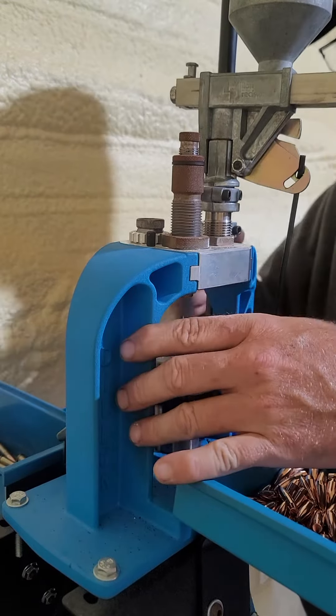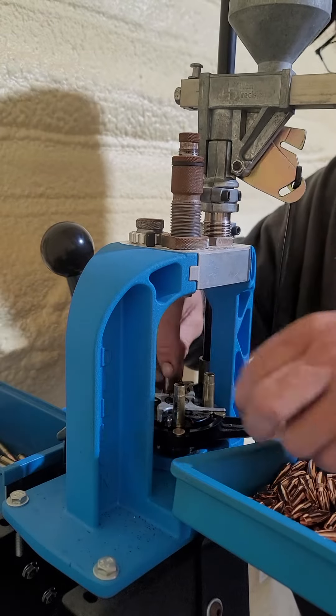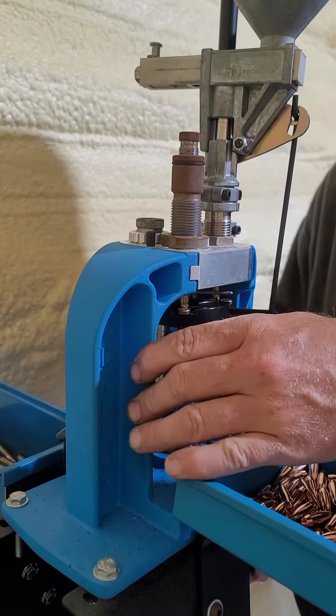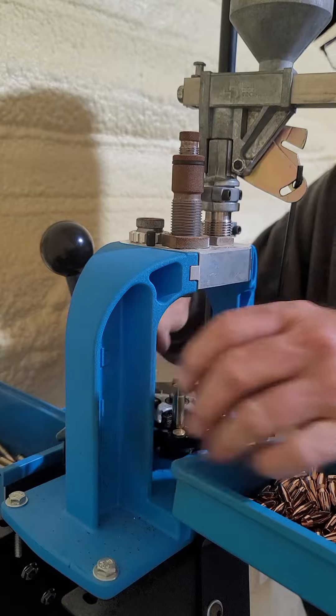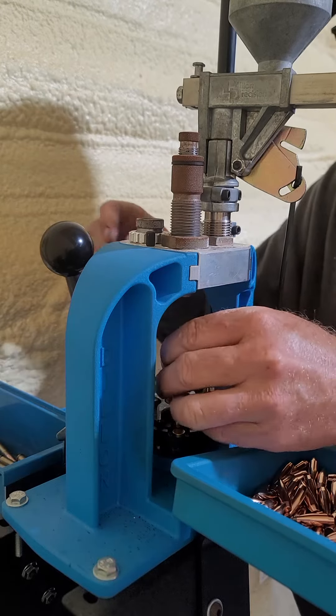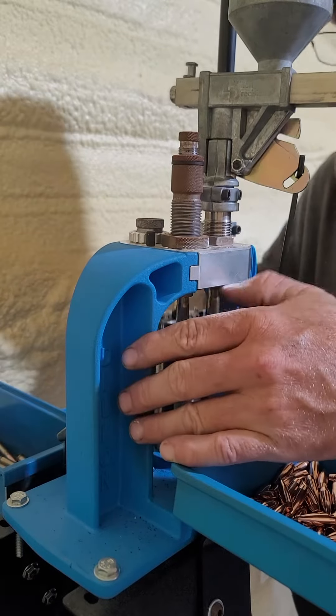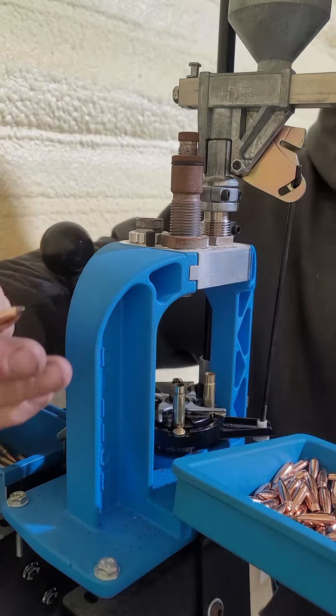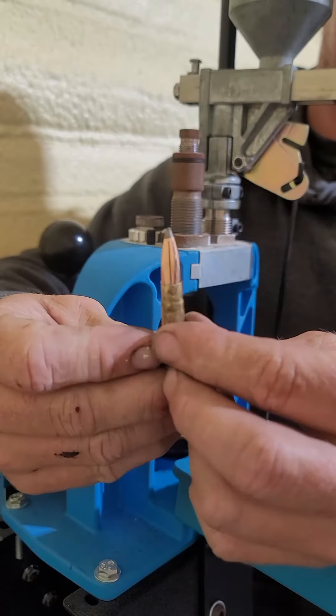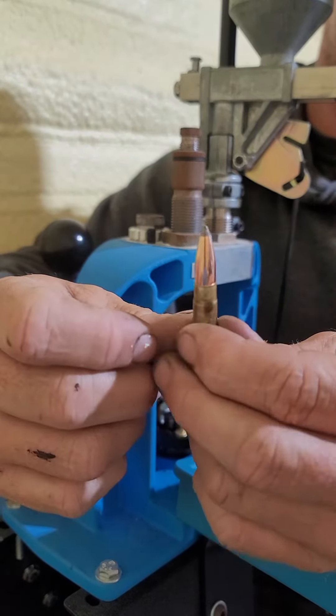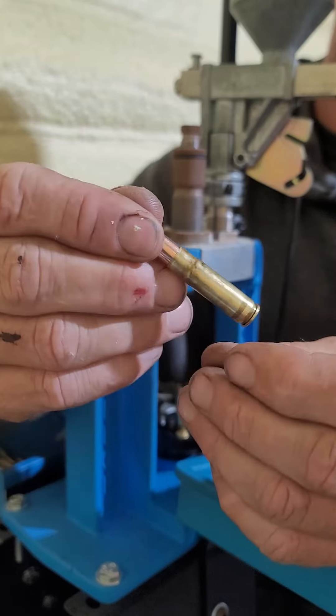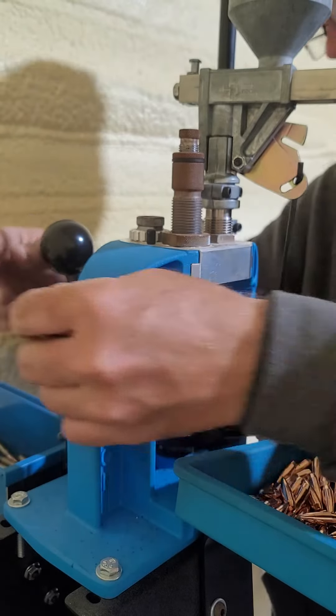Put in a projectile, it crimps, adds powder, sets the bullet, crimps it, drops it in. I'll show you what it'll drop right there - 300 Blackout Speer's soft point, ready to shoot.